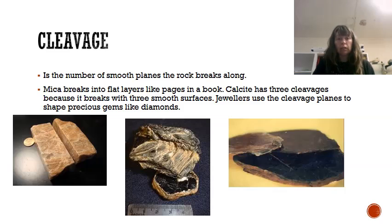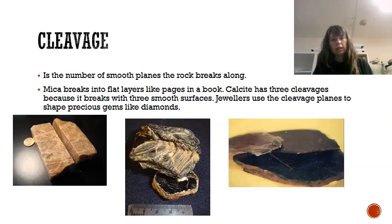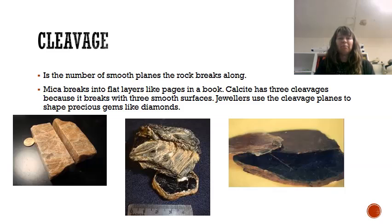Cleavage means breaking something into pieces along smooth lines. It describes the number of smooth planes that a rock can break along — you might have smashed a rock and it broke into two perfectly even parts with a smooth line in between. Always think of a meat cleaver: it cleaves things, cutting meat into two pieces. Jewellers particularly like cleavage planes because it's easy to shape diamonds if you know exactly where to hit them. Hit them in the wrong spot and the rock crumbles, wasting a lot of money.